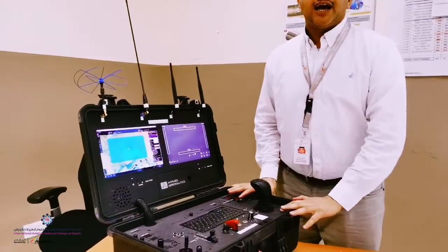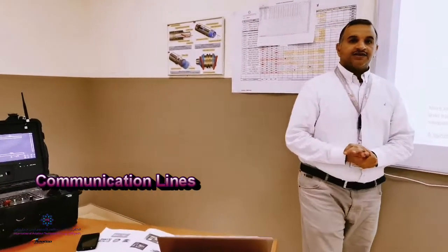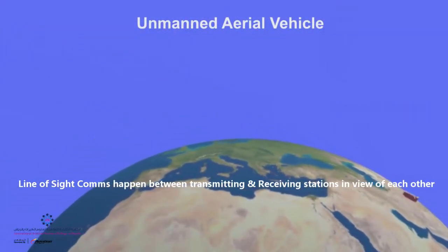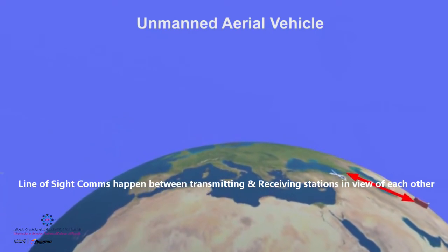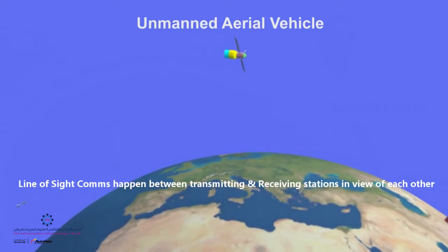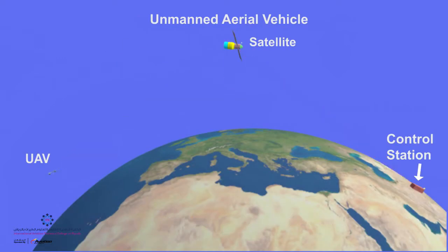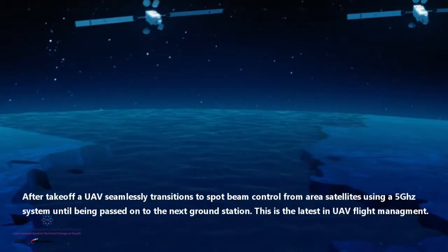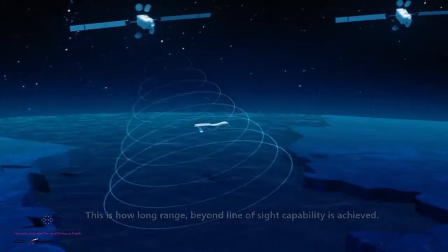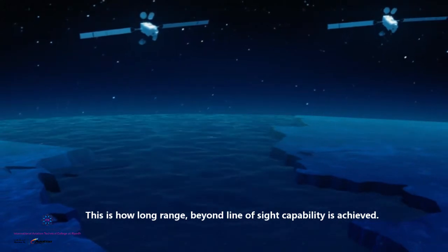When we talk about line of sight mission or flying, that means we can use an antenna to transmit and receive information or data from the UAV itself. When we are talking about beyond line of sight or SATCOM communications, that's where the satellites take over the links to transmit data to UAV or receive the data from UAV towards the ground station.